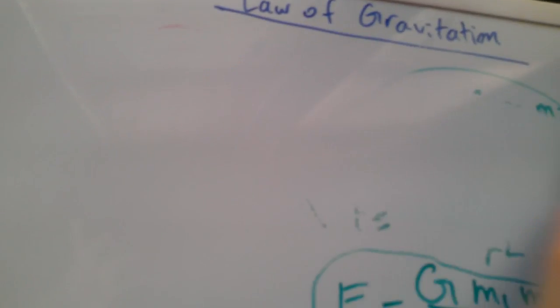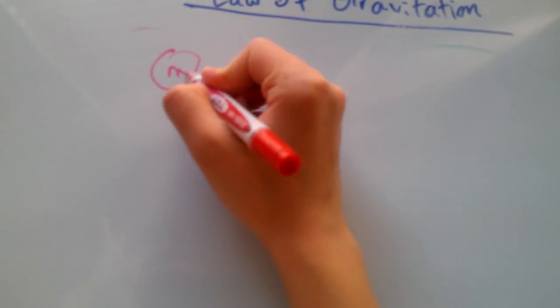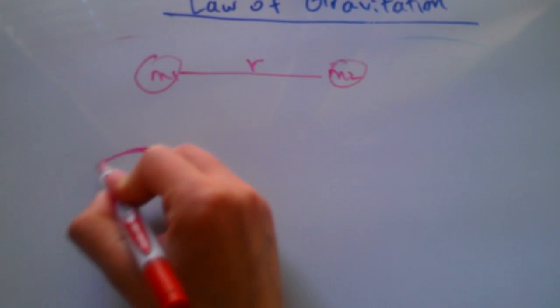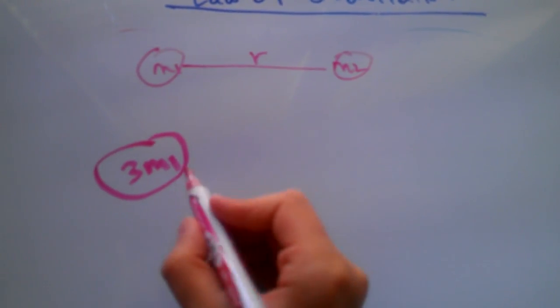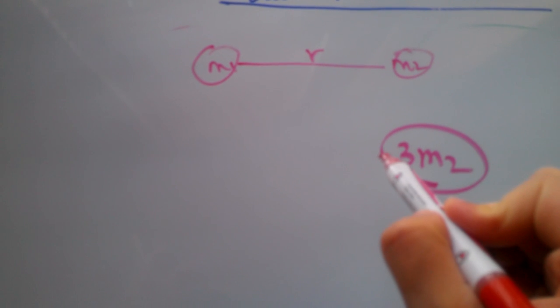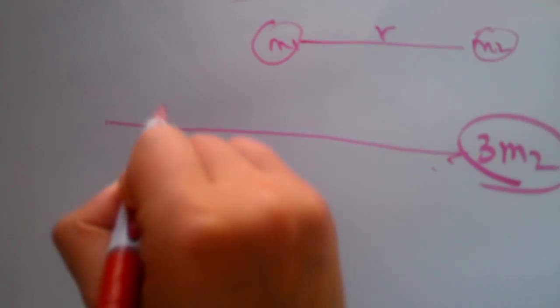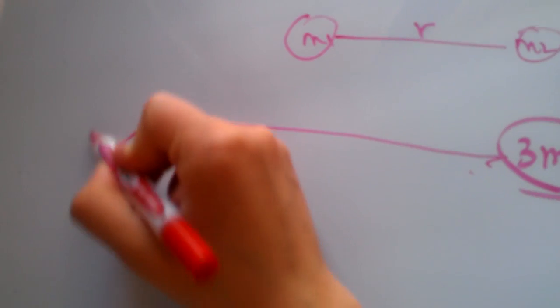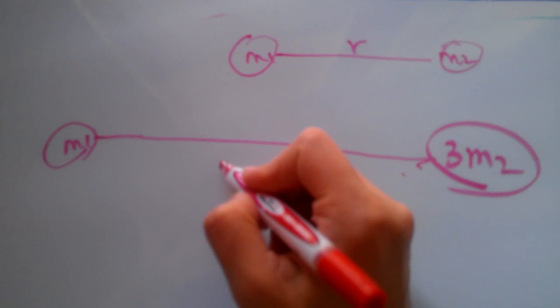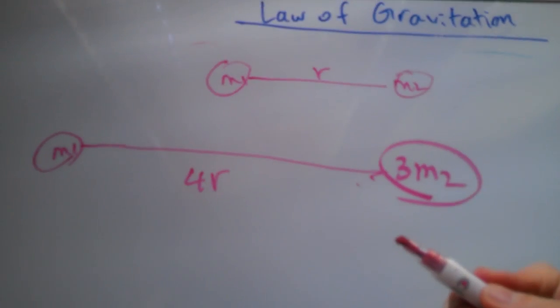Third question. If I have m1 and m2 with a distance of r first, what happens if I triple one of them, either, I don't care, I can just do the other one. So I triple one of them, whichever, and I make the distance four times. This becomes four times r.